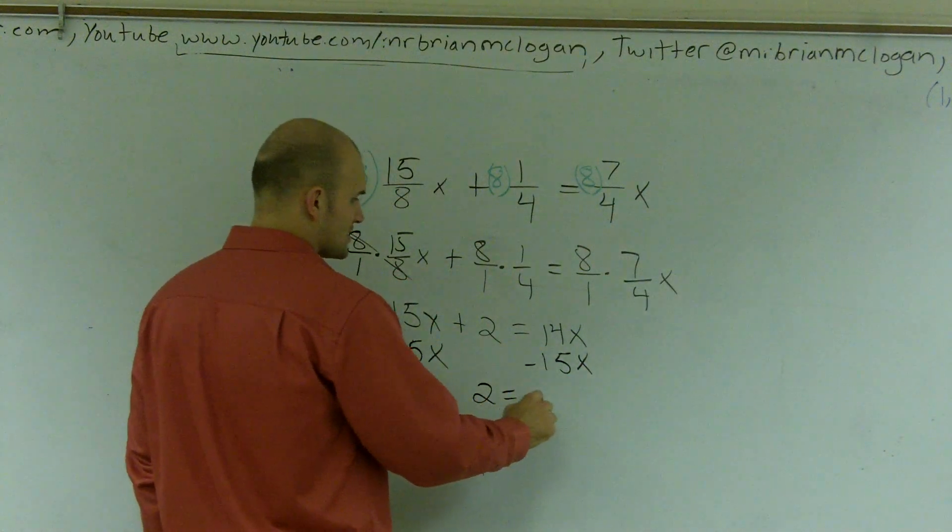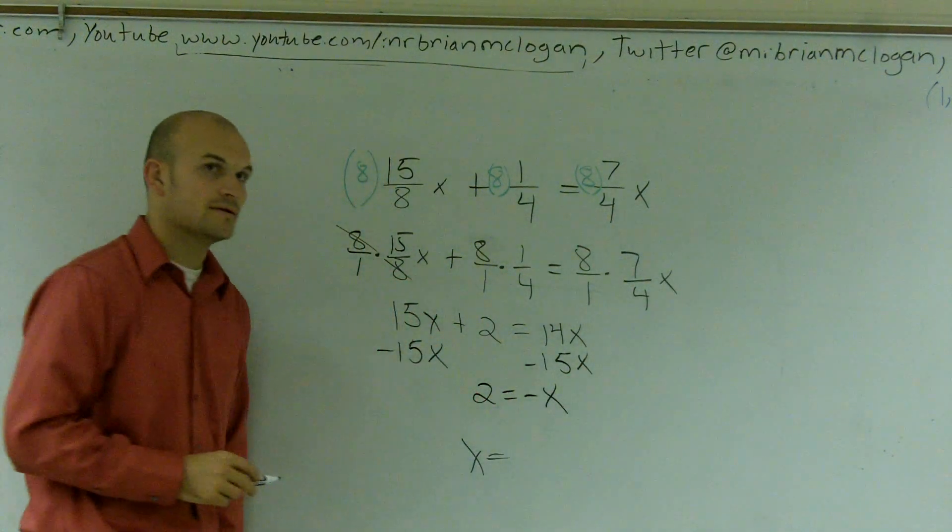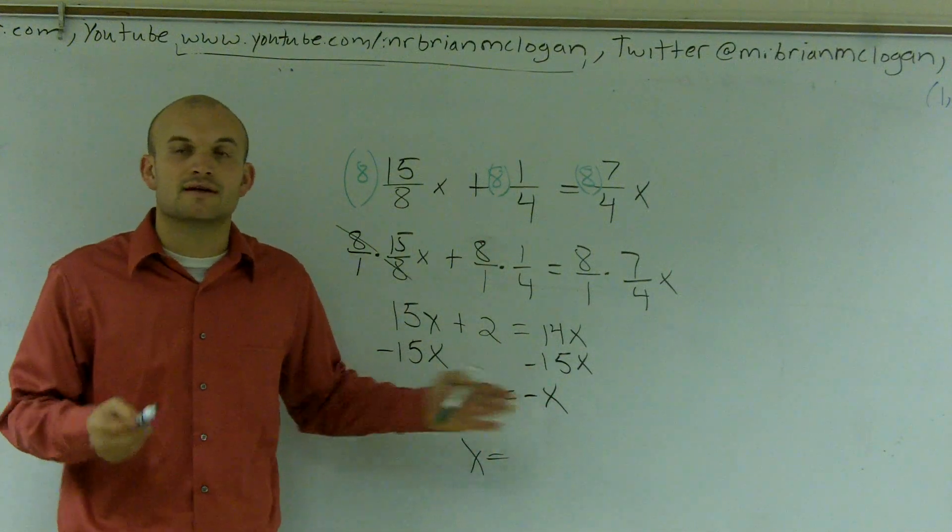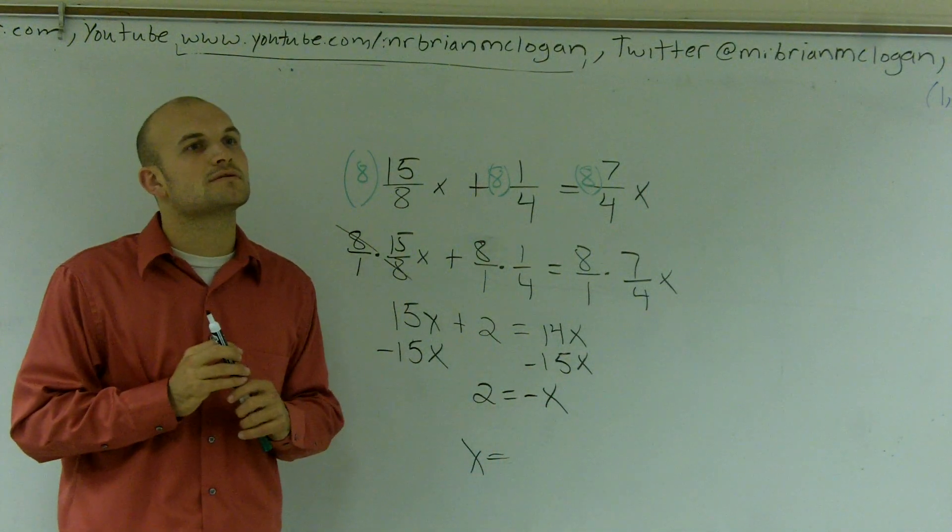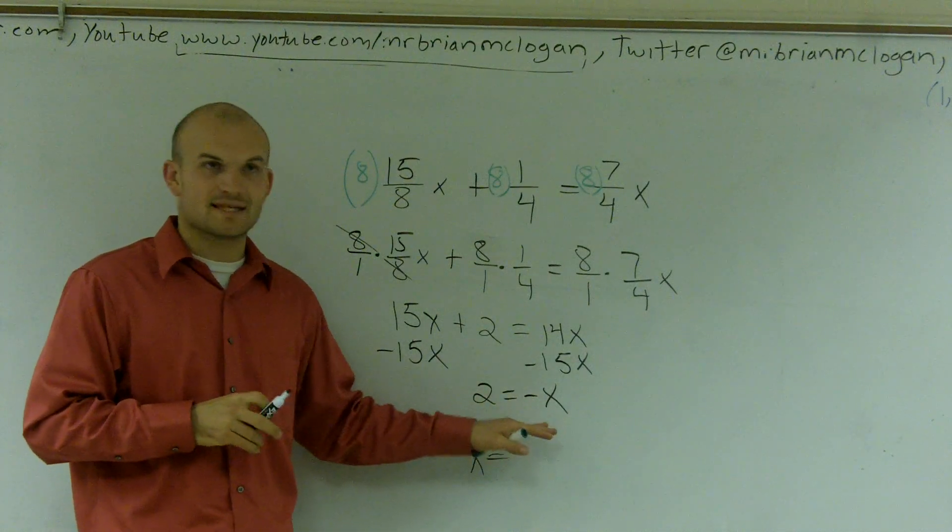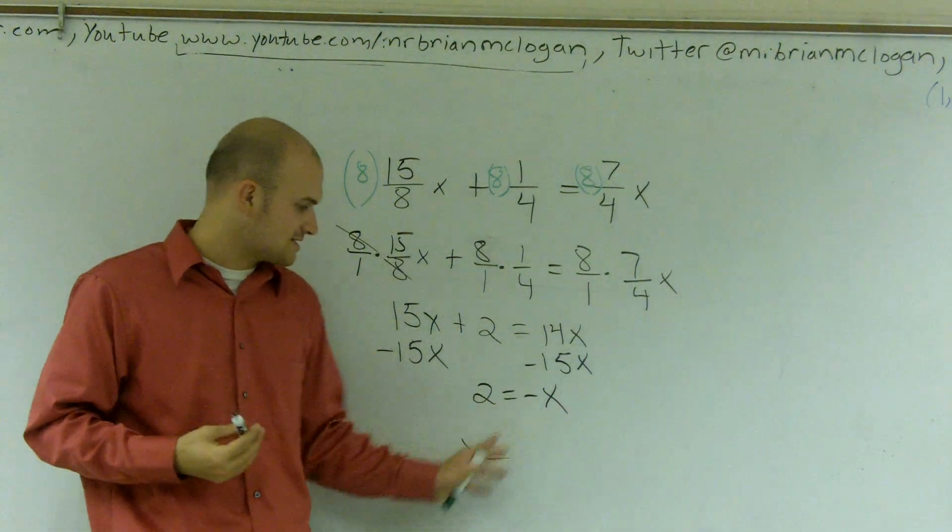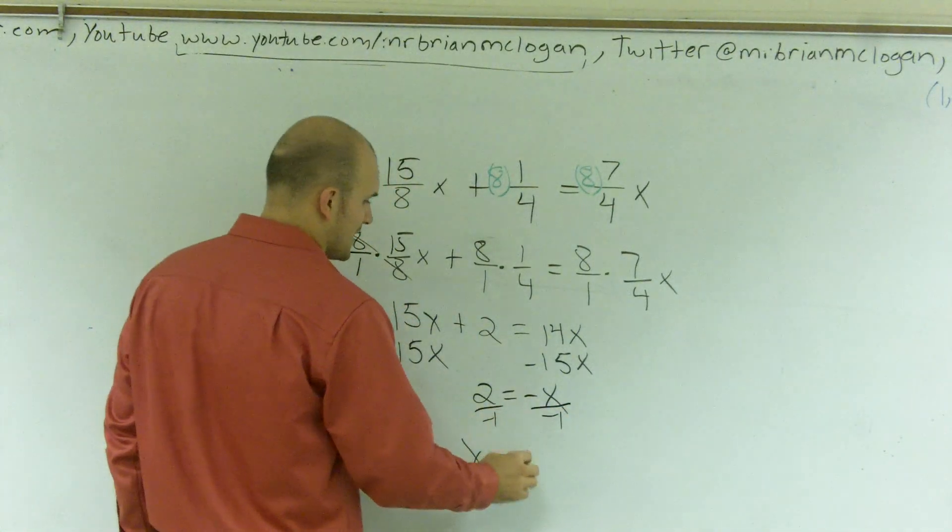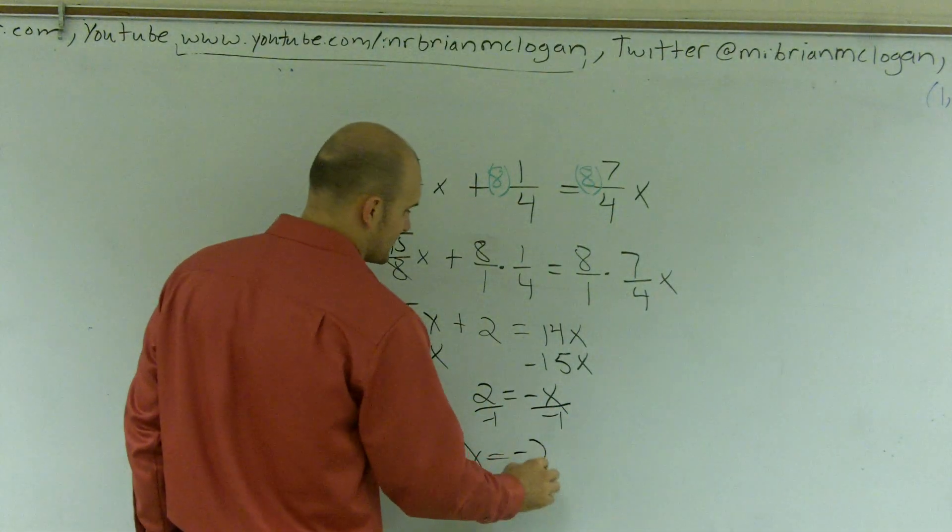Therefore, I'm left with two equals a negative x. So now my x is alone, however, I do have a negative side in front. So I don't want to be dealing with a negative. I'm not solving for negative x. I'm going to need to solve for positive x. So I divide by negative 1, and I get x equals a negative 2.